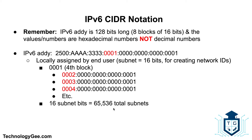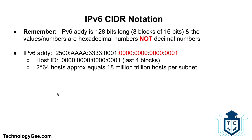IPv4 is capped at around 4 billion addresses, whereas with IPv6 you can theoretically never run out. The last four blocks represent the host ID, and the host ID can support 2 to the 64th power hosts — approximately 18 million trillion hosts per subnet. So each of the 65,536 subnets can support up to 18 million trillion host IDs, which is why you will never run out of IPv6 addresses.